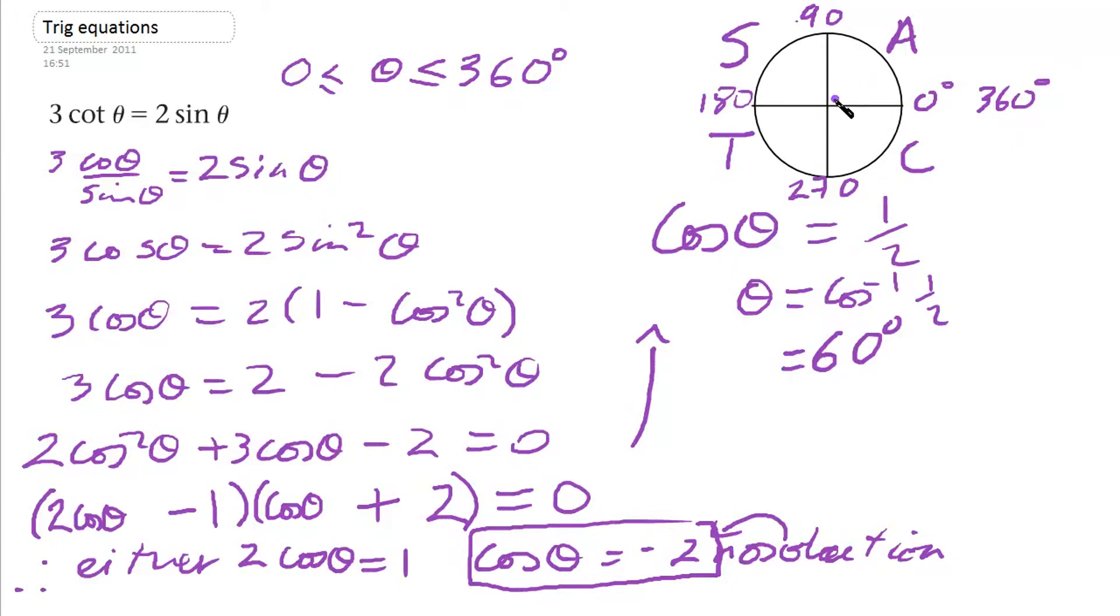So the first answer we got was 60 degrees. So there's your 60 degrees. And that gives us our first answer. Now, that's where they're all positive. We're dealing with cos and cos is positive. Cos theta equals half.